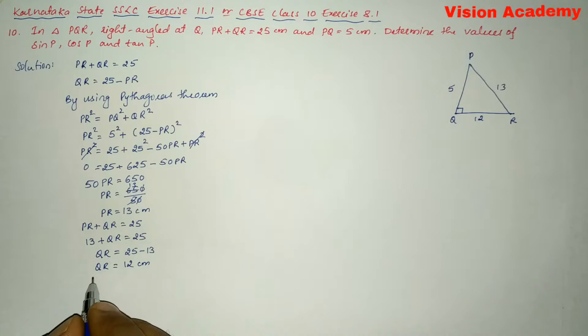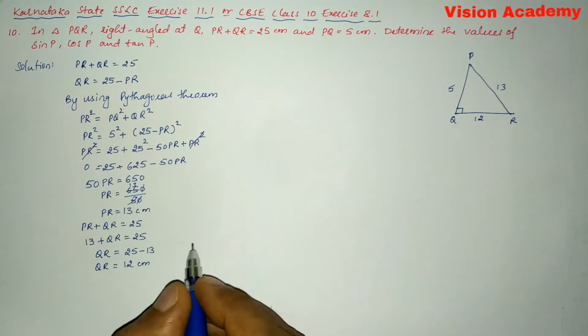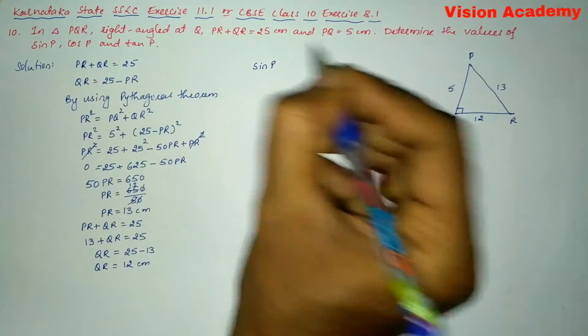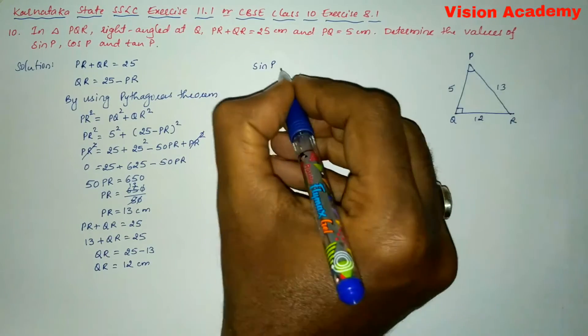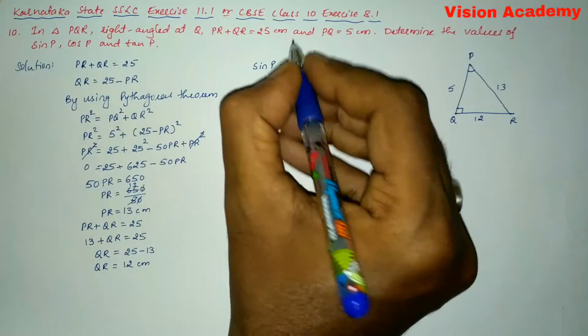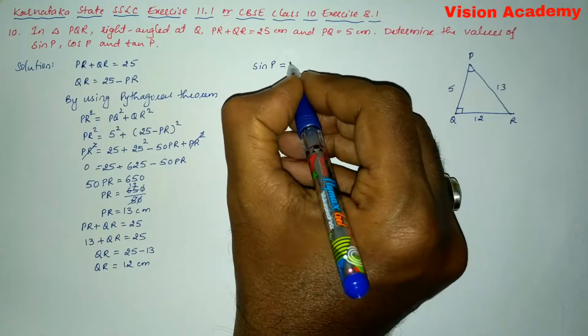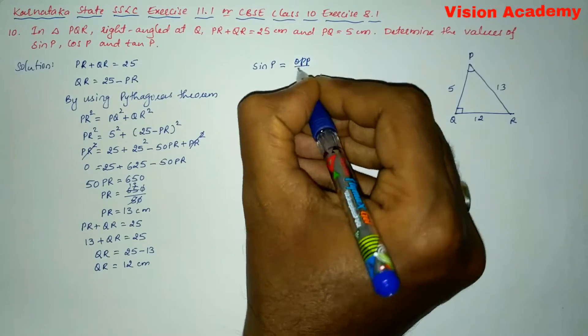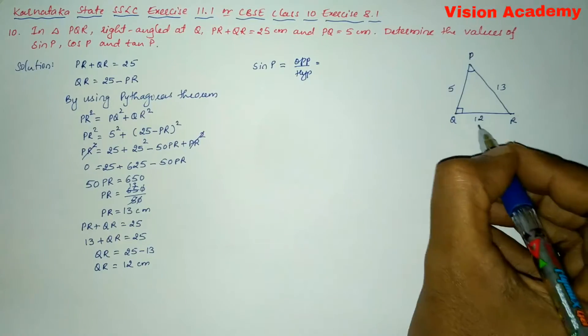Now we will move on to sin P. Here we will write first sin P. With respect to this angle we will write sin P is equal to, we know sin P is opposite by hypotenuse.